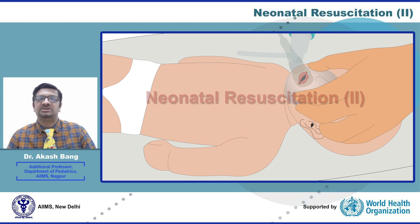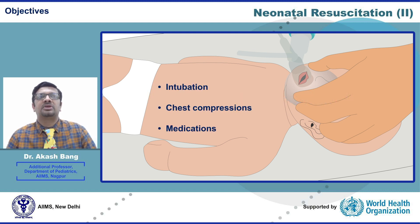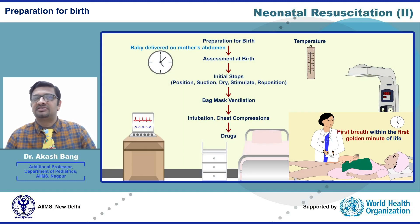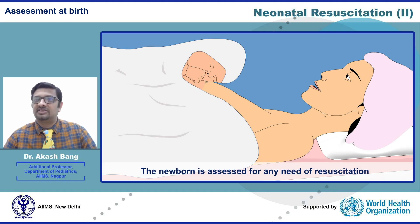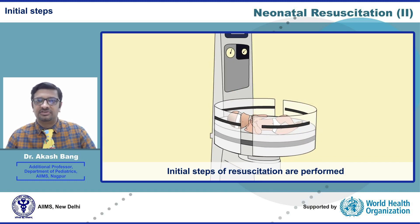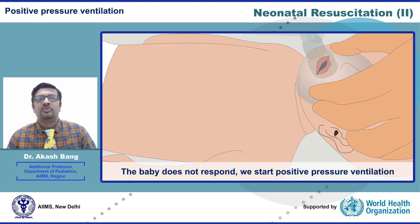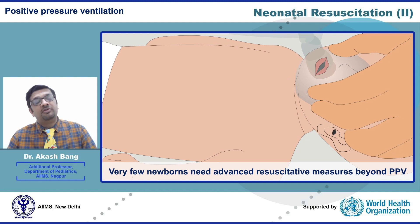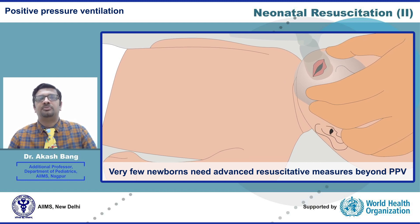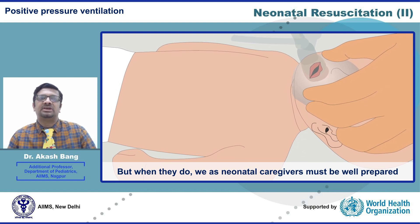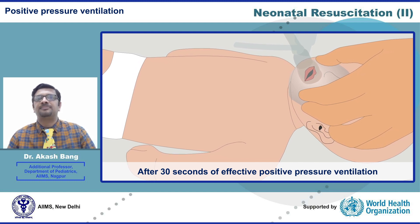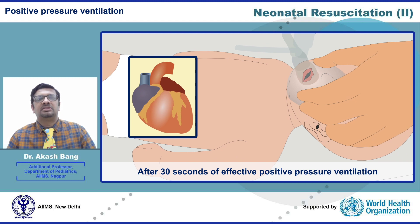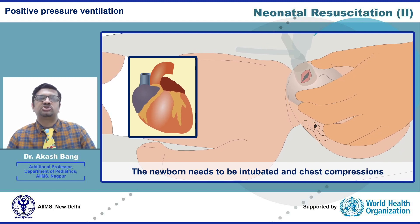We will cover advanced resuscitation measures like intubation, chest compression, and medications. Neonatal resuscitation is a very orderly and systematic process where we follow sequential steps to restore life. Immediately after birth, the newborn is assessed for any need of resuscitation; initial steps are performed, and if the baby does not respond, we start positive pressure ventilation. Very few newborns will need advanced measures beyond PPV, but when they do, we must be well prepared. Even after 30 seconds of effective PPV, if heart rate is below 60, the newborn needs to be intubated and chest compressions need to be started.